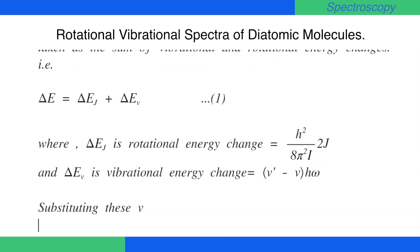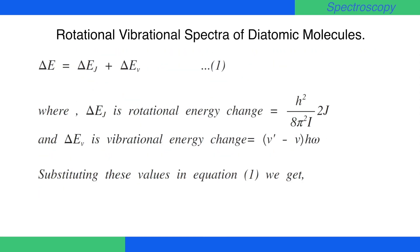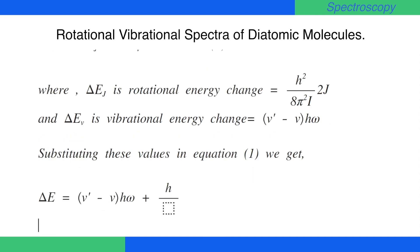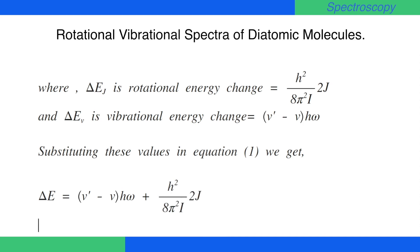Substituting these values in equation number 1, we get ΔE = (v' − v) · h · ω + h² / (8π²I) · 2j. This is equation number 2.